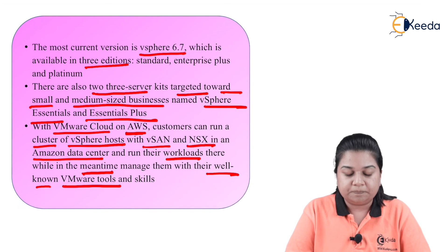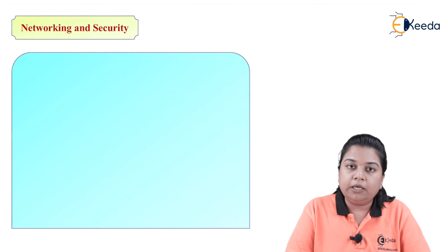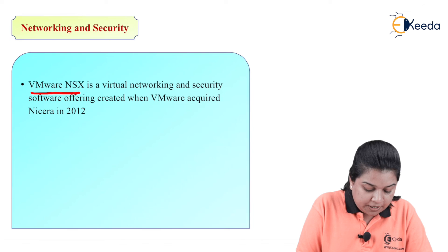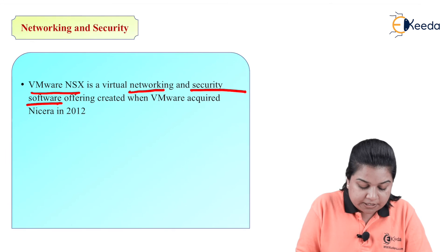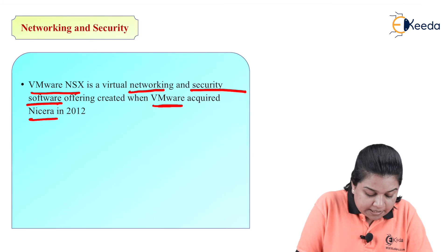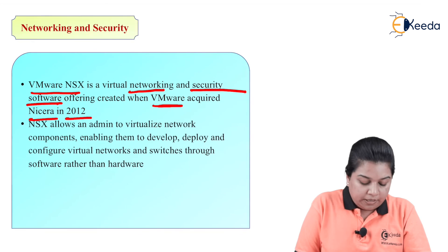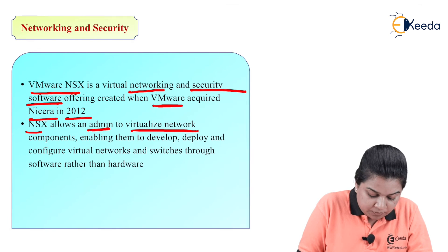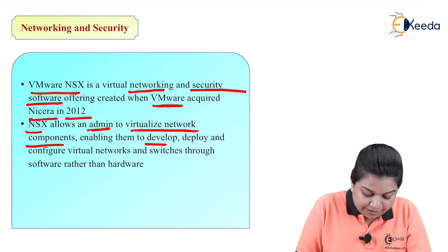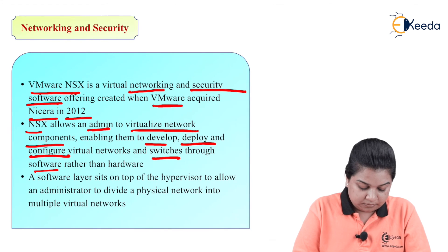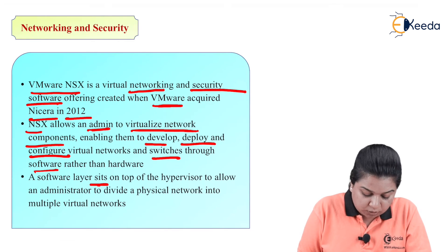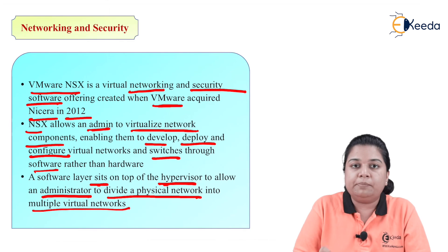In VMware networking and security, VMware NSX is a virtual networking and security software offering created when VMware acquired Nicira in 2012. NSX allows an admin to virtualize network components, enabling them to develop, deploy, and configure virtual networks and switches through software rather than hardware. It sits on top of the hypervisor as a software layer, allowing an administrator to divide a physical network into multiple virtual networks.